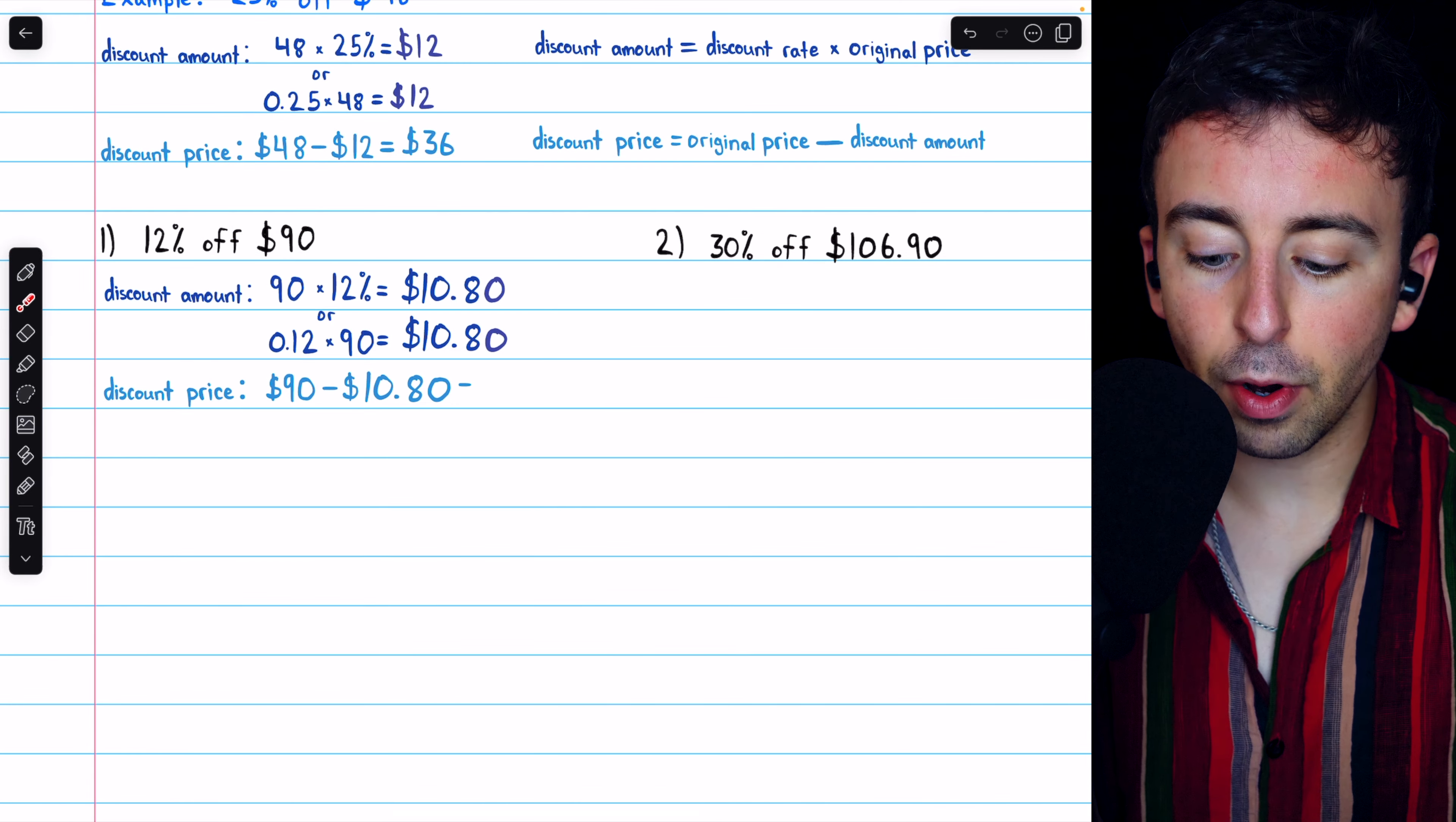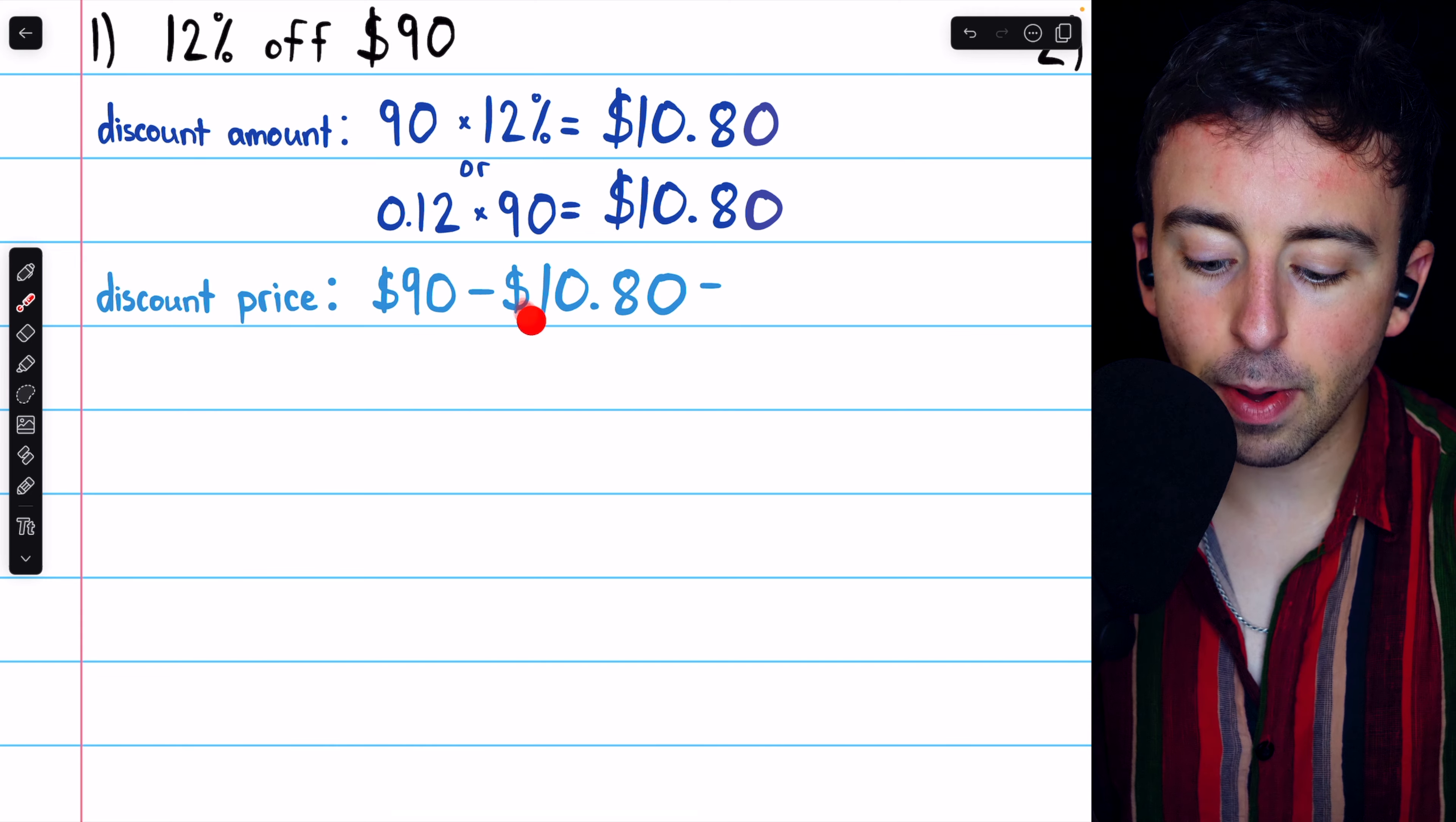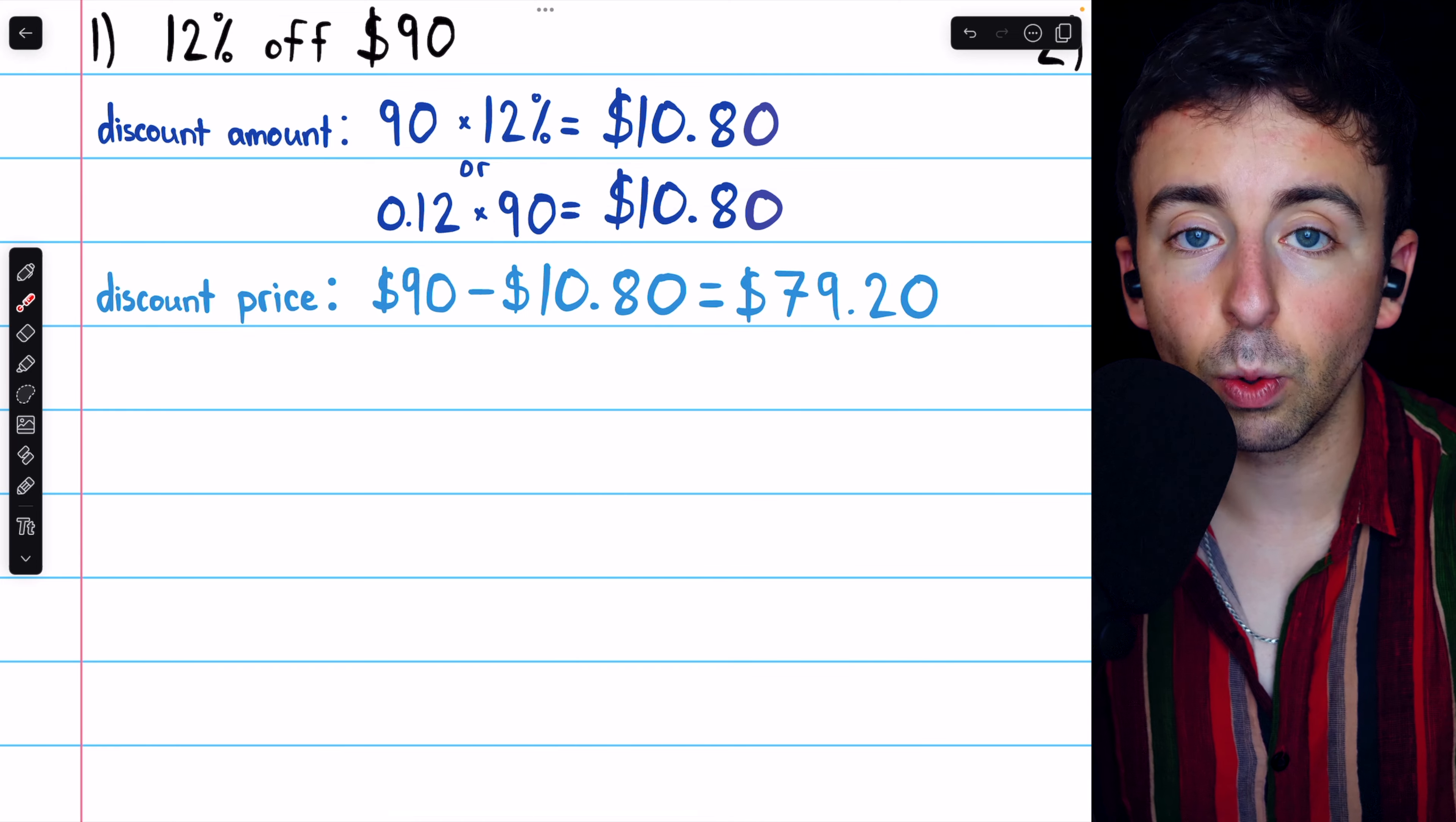Then remember, to calculate the discount price, just take the original price and subtract the discount amount we just found. So $90, the original price, minus the amount of the discount, which is $10.80. Doing this subtraction, we find that the discount price is $79.20.